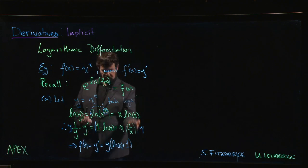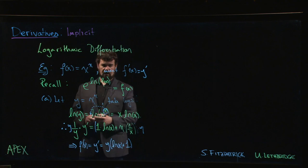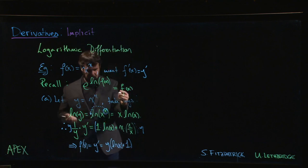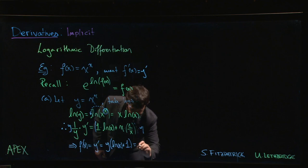You probably don't want to leave your answer like that. If we started with a function of x, we should end with a function of x—we shouldn't have this y in there. But it's okay, we know what y is: y is x to the x. So this is x to the x times the natural log of x plus 1.